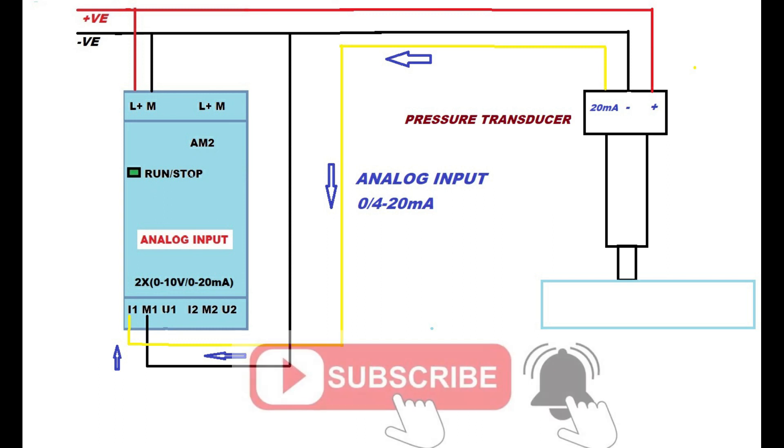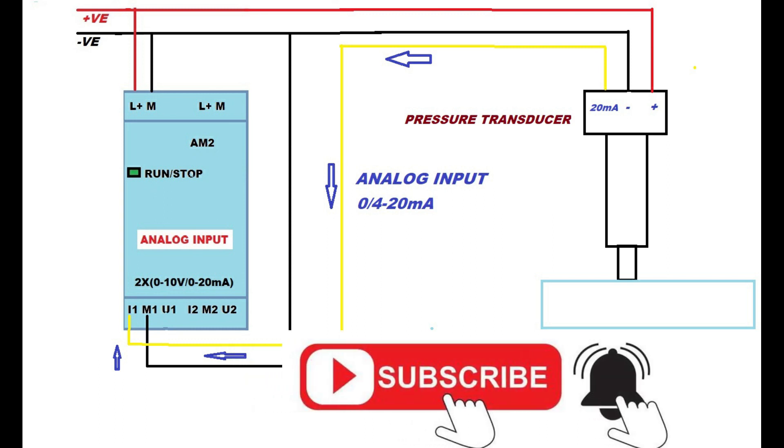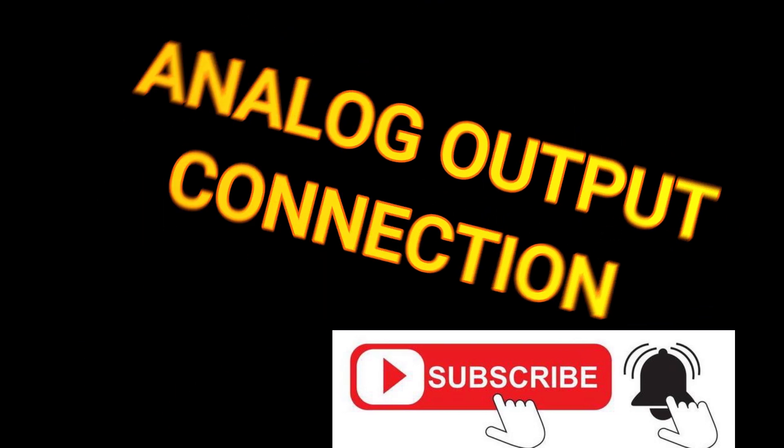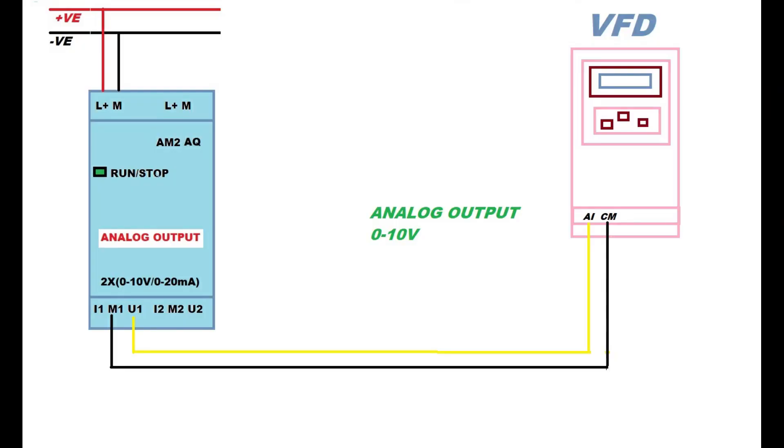So when we are connecting, make sure that you are connecting to the right terminals. Similarly, you can use up to eight analog outputs with the extension module. The analog output module also has the same condition as analog input: separate current output and voltage output with separate terminals.